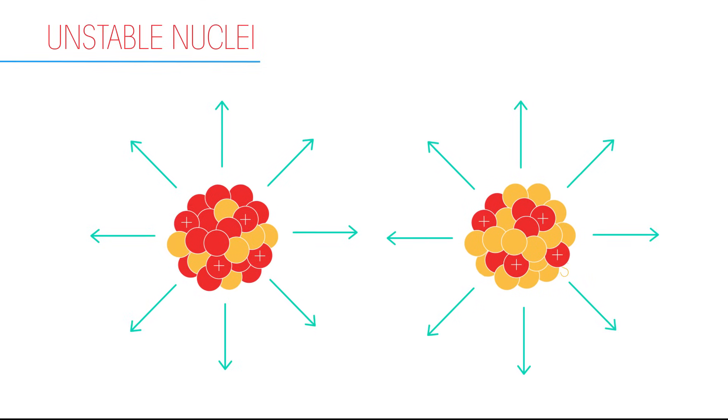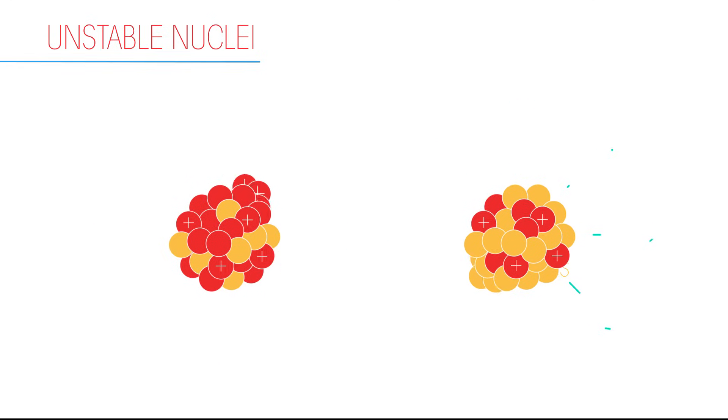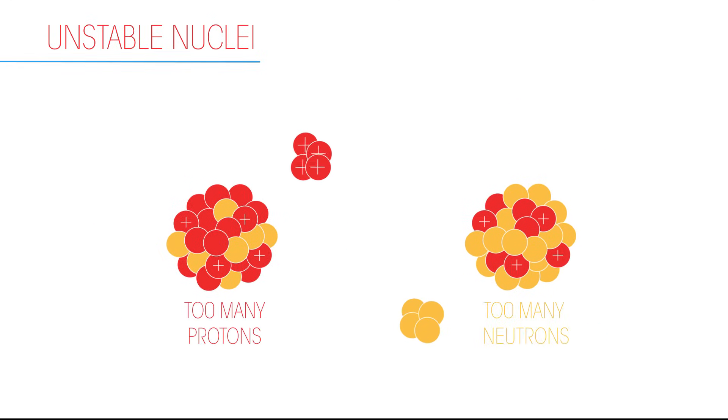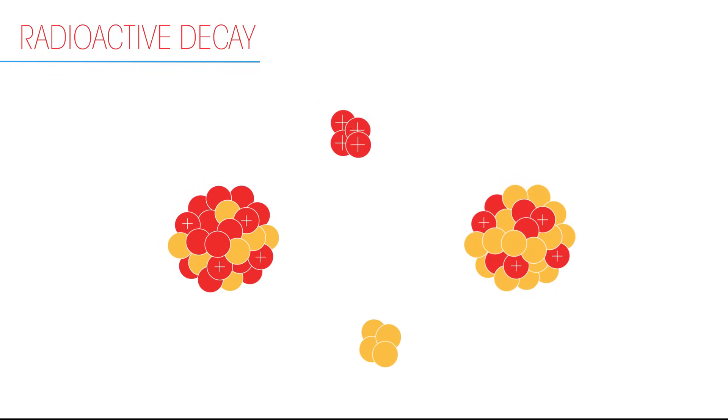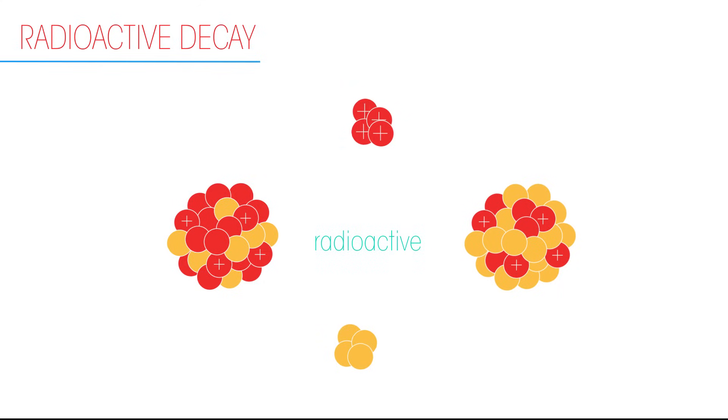Unstable nuclei try to balance themselves by giving off the excess proton or neutron. This is radioactive decay. Unstable nuclei are radioactive and emit radiation.